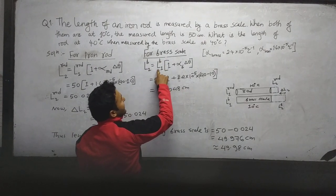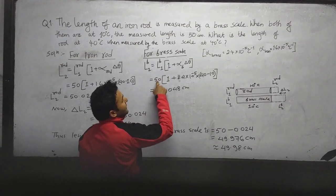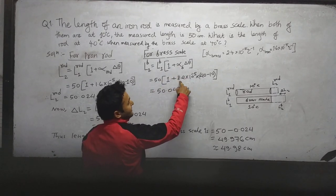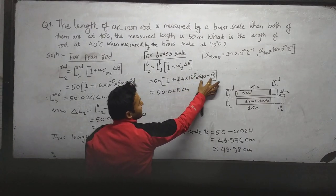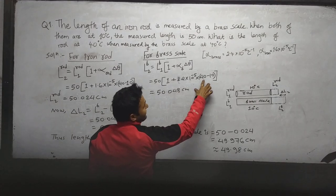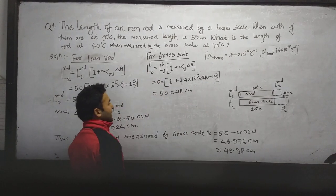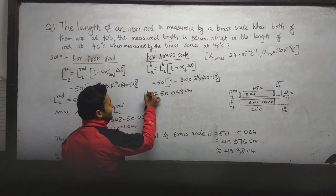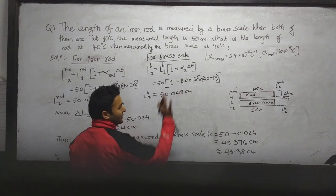For the brass scale, the initial length L1_brass is 50 cm, the value of α_brass is 2.4 × 10⁻⁵, and the temperature difference is the same — 40 minus 10. By calculating, L2_brass = 50.048 cm.